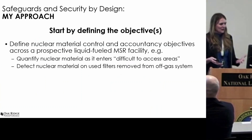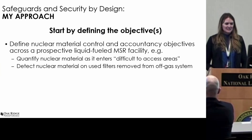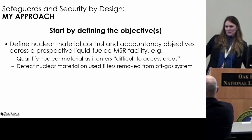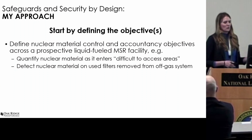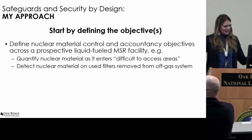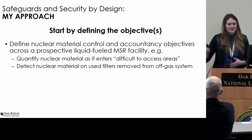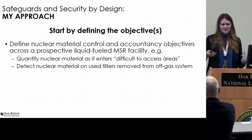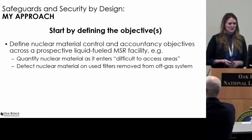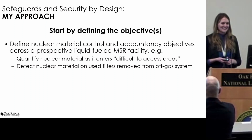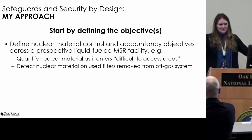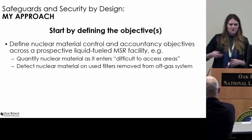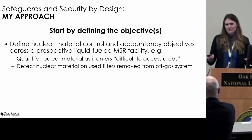My approach in the near term is to really start by defining the objectives — instead of starting with an instrument or measurement technique and picking where to apply it, we're thinking through what's the goal, what's the objective. Across a future MSR facility, what does that look like throughout all the process streams? What are the nuclear material control and accountancy objectives? Two examples from lists of tens we've come up with: quantifying the nuclear material as it enters a difficult-to-access area — the physical or biological shielding boundary containing most process streams — and detecting nuclear material in filters removed from an off-gas system.